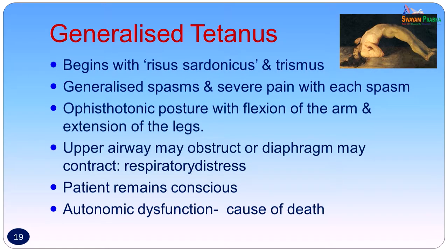Generalized tetanus is usually seen in adults. It begins with risus sardonicus — a sardonic smile due to spasm of the facial muscles — trismus, difficulty in swallowing, generalized spasms and severe pain with each spasm, and opisthotonus posture with flexion of the arms and extension of the legs. The upper airway may obstruct or the diaphragm may contract, resulting in respiratory distress. The patient remains conscious till the end, and autonomic dysfunction is usually the cause of death due to respiratory failure.